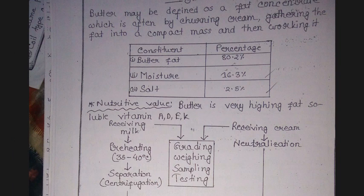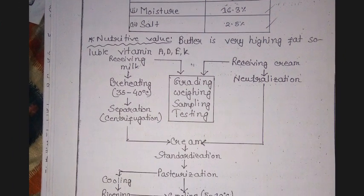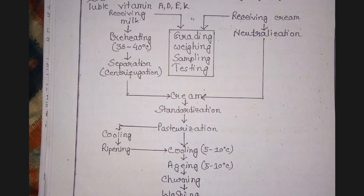From receiving milk, it goes to preheating at 35 to 40 degree Celsius, then separation. From receiving cream, it goes to neutralization, then cream standardization, pasteurization, and cooling at 5 to 10 degree Celsius.